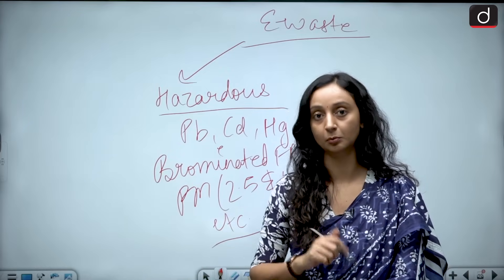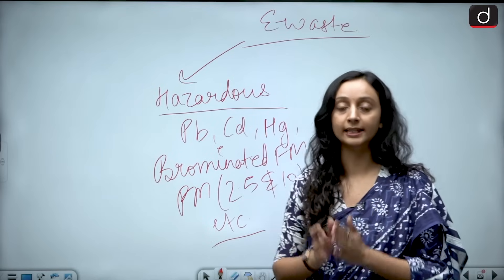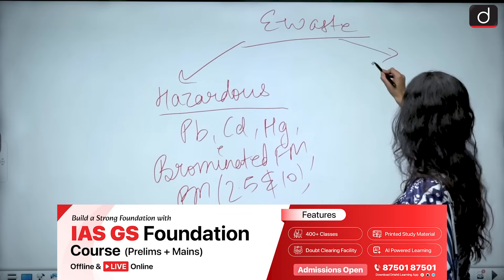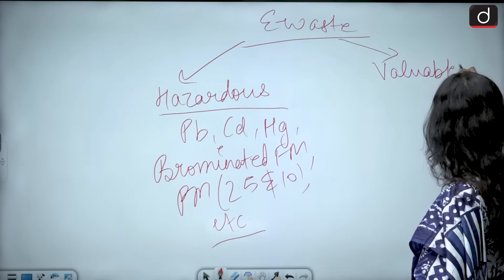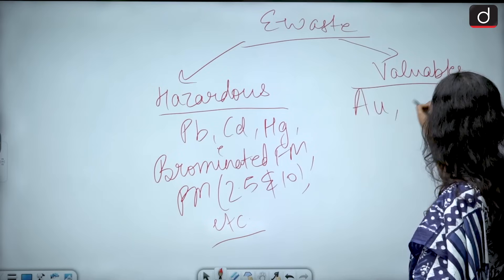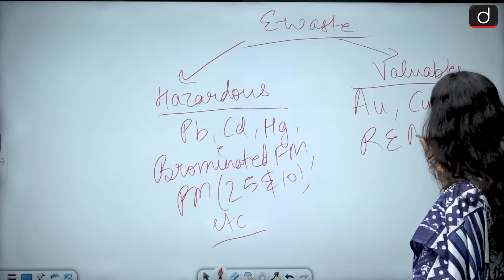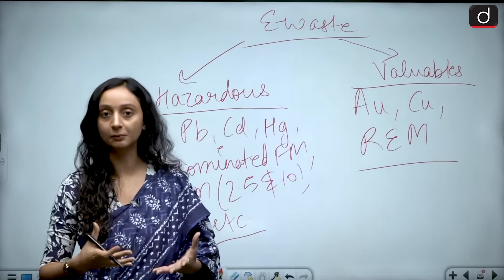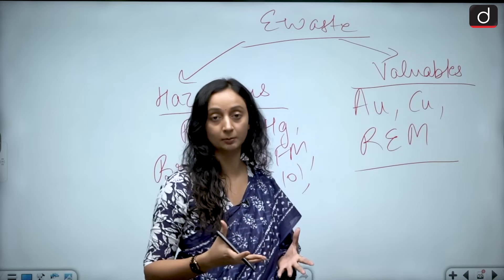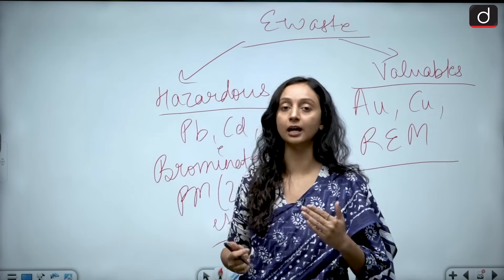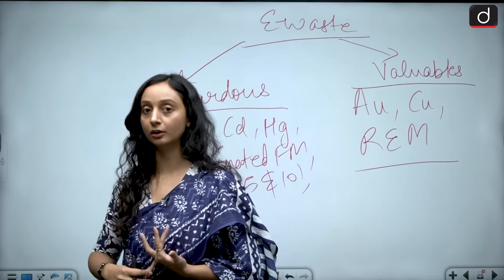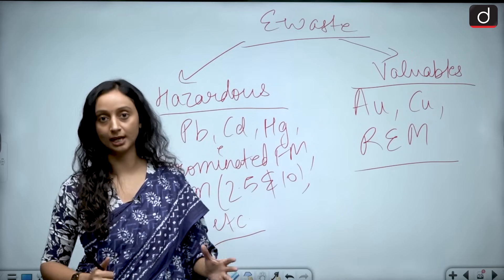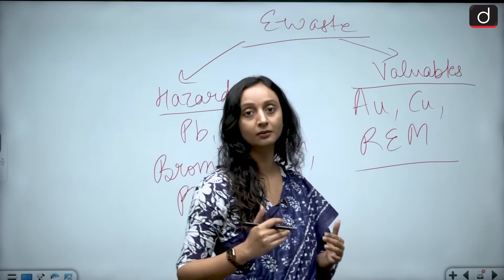So the treatment of e-waste becomes very important. At the same time, while e-waste has hazardous substances, it also has valuables — like gold, copper, and even rare earth minerals — because all these things are used in the production of semiconductors, which are used in our electrical appliances. So it becomes very important to treat our e-waste correctly: A, we want to get rid of the toxic substances, and B, we also want to recover our valuables as much as possible.